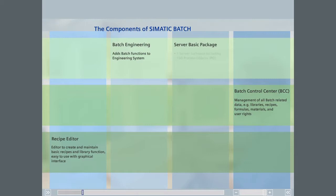The Batch Basic Package consists of three components: the Batch Server software, a Batch Control Center, and a Recipe System. Additional control center and recipe system packages can be ordered individually. The server software is installed on the batch servers and supports up to 150 batch process objects (PO). Options and power packs are available to increase PO support to 300, 600, 1800, or unlimited process objects.